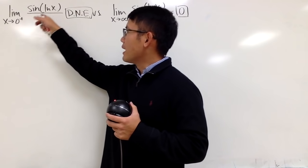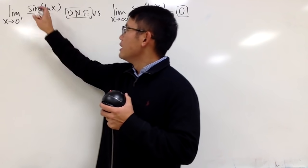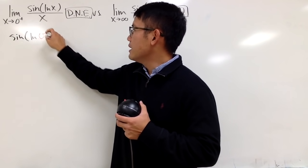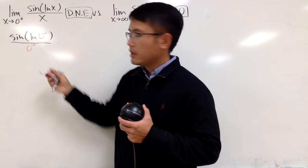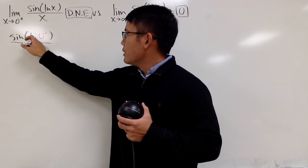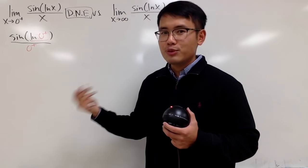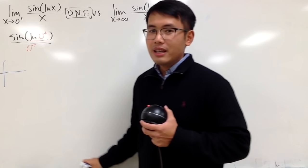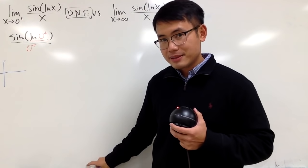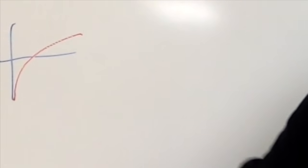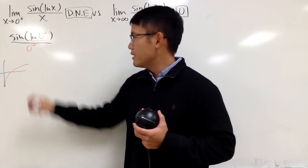For the first one, I'm just going to plug in 0 plus into all the x to see what happens. Right here, I see I have sin of ln of 0 plus like this over 0 plus in the denominator. Now, we are going to just argue each and every step. So, ln of 0 plus, let me just show you guys the graph real quick. If you look at the graph of ln, the graph looks like this. And if you approach 0 from the right-hand side, as you can see the graph goes straight down. So, this goes to negative infinity, right?